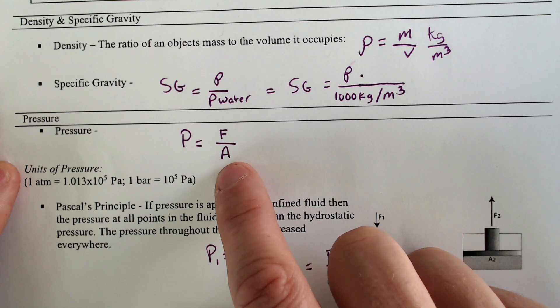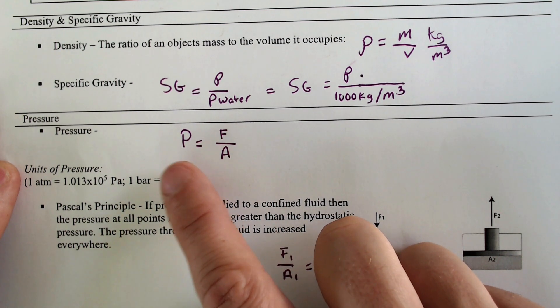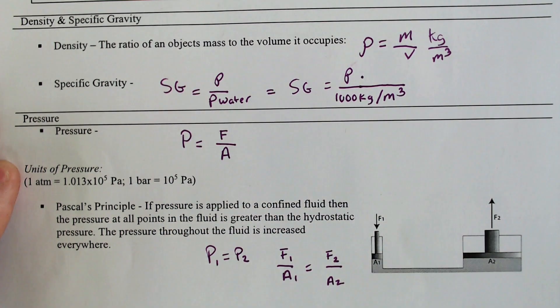Anytime you divide by a bigger number, you end up getting a smaller number, and therefore the pressure would be less.